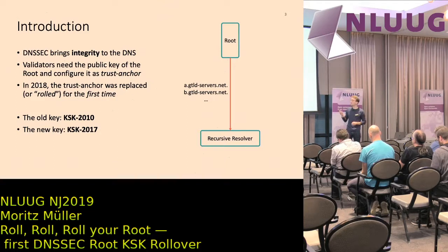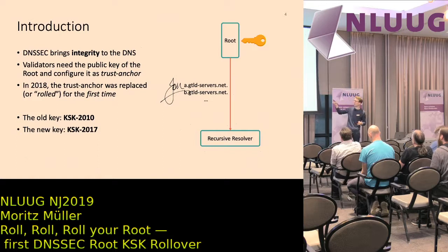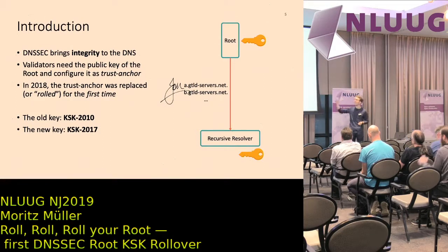This is where DNSSEC comes into place. With DNSSEC, the root zone is signed with a public-private key, and every single record in the root zone is signed as well — a signature is attached to each response. The recursive resolver can receive and validate these signatures, but it also needs a copy of the root's public key and must trust that key. Every other zone in the DNS depends on this key at the top.